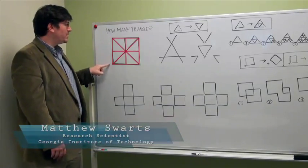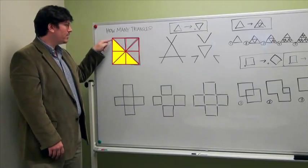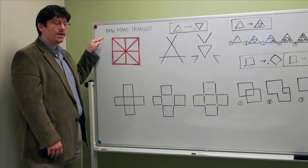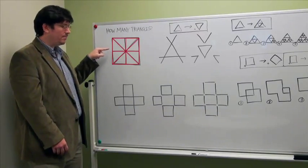We can decompose this into a lot of different ways. So here we can see a large triangle and here we can see smaller triangles. Shapes actually are easy for us to recognize multiple subshapes within them.